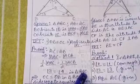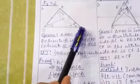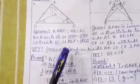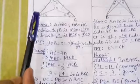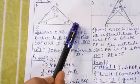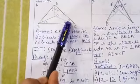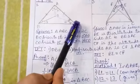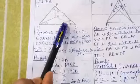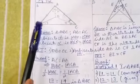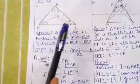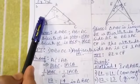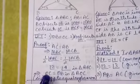Again, applying the isosceles triangle property: in a triangle, when two angles are equal, the sides opposite to them are also equal. In triangle OBC, the equal angles are angle 3 and angle 4. The side opposite to angle 3 is OC, and the side opposite to angle 4 is OB. So OC equals OB.